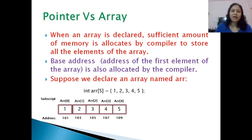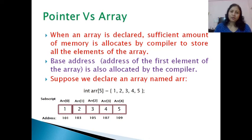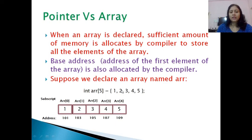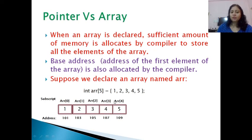For example, if we declare an array of size 5, the compiler allocates space to store 5 elements. The base address of the array is the address of its first element, allocated by the compiler. Here in the example, we declare the array named ARR of integer type with size 5, storing values 1, 2, 3, 4, 5. ARR[0] represents the first position, ARR[1] the second, up to the fifth position.